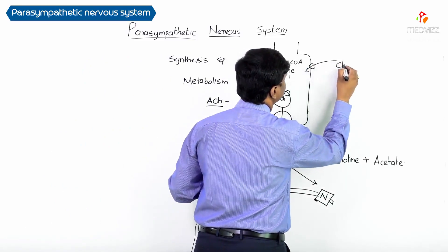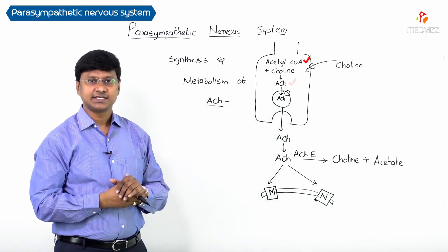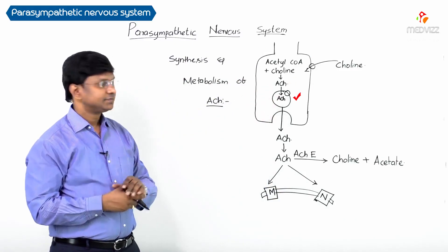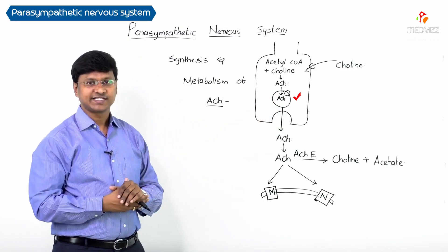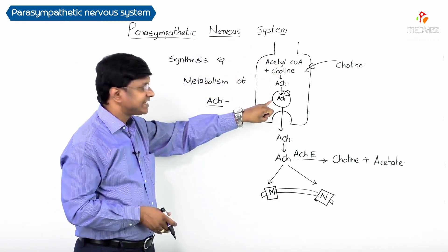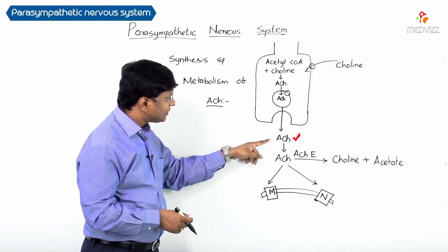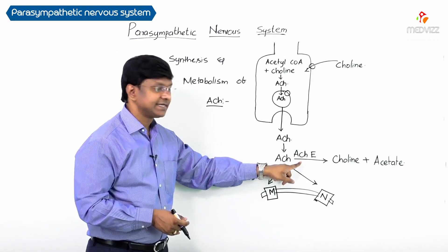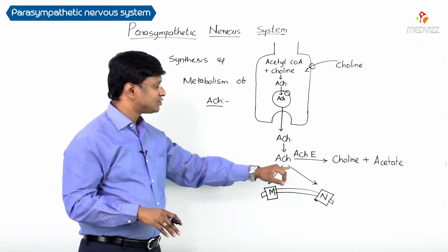The acetylcholine formed is taken up by vesicles and stored within them. Once the cholinergic neuron receives a stimulus, acetylcholine is released from the neuromuscular junction, where it undergoes metabolism.